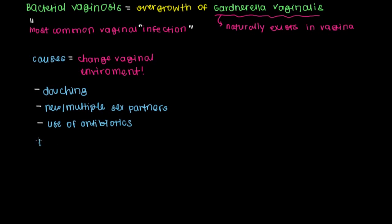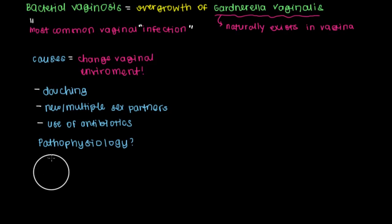So we've touched a little bit on it, but I want to draw it out. When we talk about the pathophysiology of a disease, we're talking about the mechanism by which that disease occurs. In order to understand the pathophysiology of bacterial vaginosis, we need to take a look at a sample of bacteria that exist in the vagina.